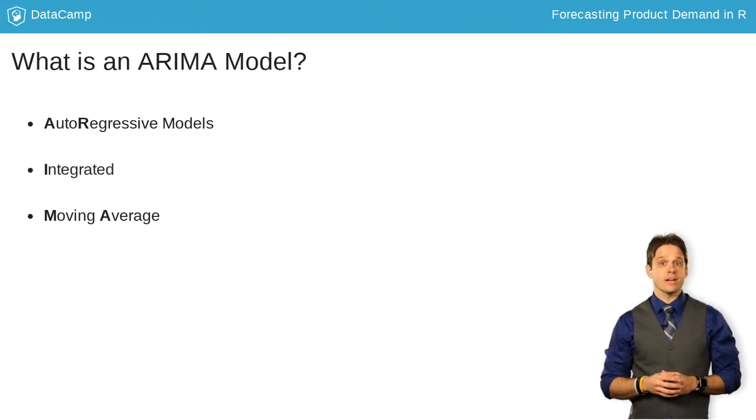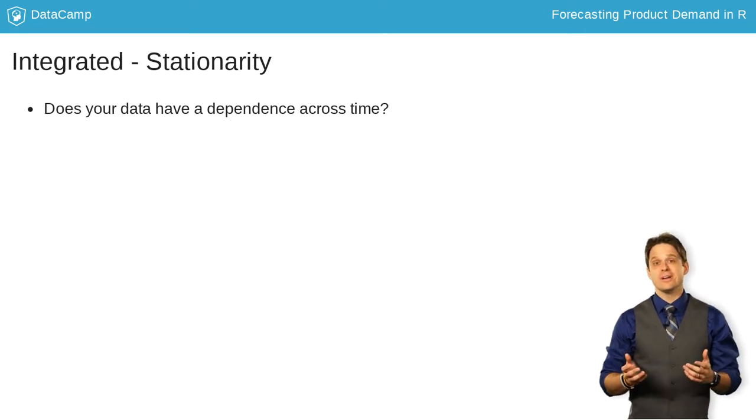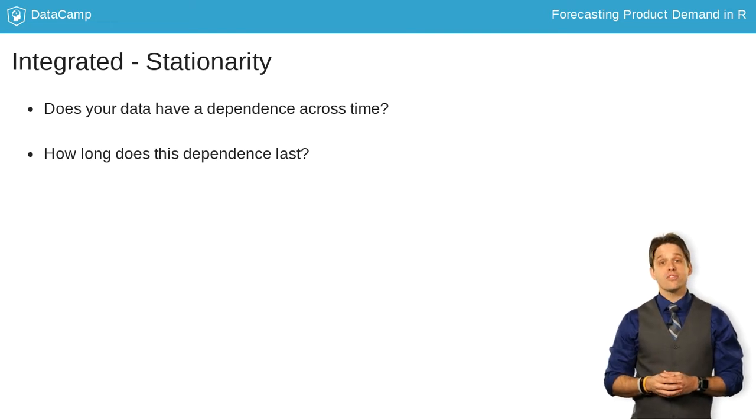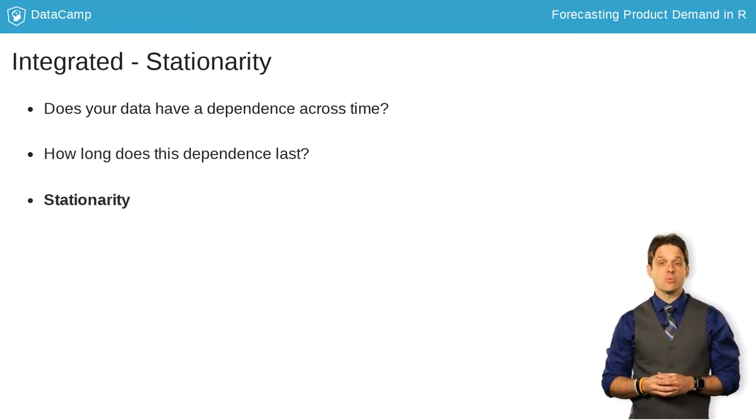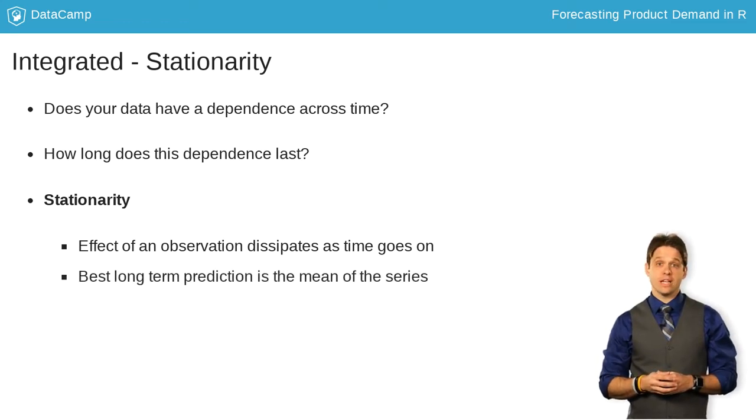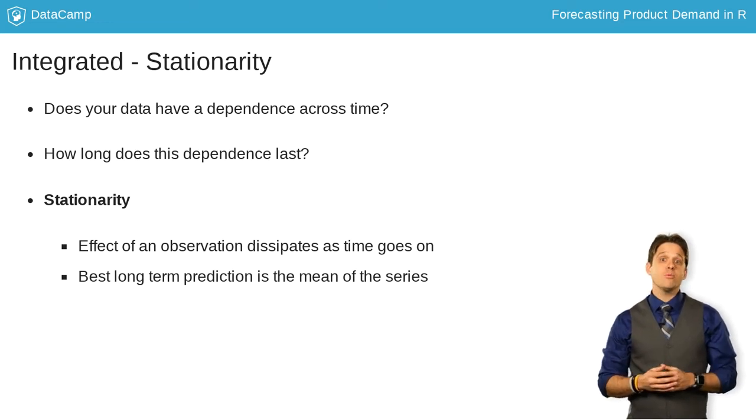Let's actually start with the integrated piece first. In time series models, we typically assume dependency across time. Otherwise, why would we care about time at all? The big questions are if this dependency exists and for how long it stays. A rather crude definition of stationarity is when effects in data dissipate as time goes on. What happens today has less and less effect on the data the further we get from today. The best long-term predictions for data that has stationarity is the historical mean of the series. A historical average wouldn't be a good prediction for something with a wave or something always trending up.